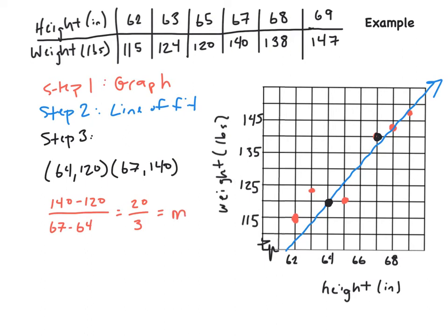Now, we have our m. Now, remember, we're going to use the slope intercept form, which is y equals mx plus b. I'm going to solve for b by doing that. I'm going to pick one of these two points and that's going to be my x and my y. So I'm just going to plug it in. So my y is going to be 120. My m is 20 over 3. My x is 64.